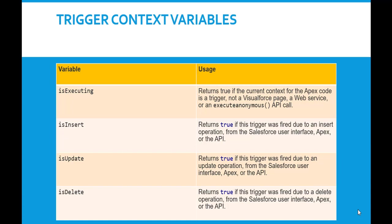isDelete returns true if the trigger was fired due to a delete operation. This context variable will return true when deleting a particular record, no matter which interface is used — the Salesforce UI, Apex code, or the API. Whenever a record is deleted and the trigger is fired due to a delete operation, this variable will return true.